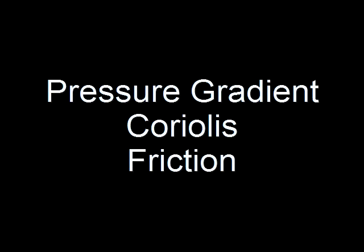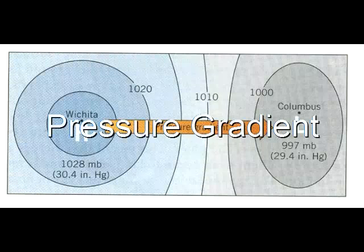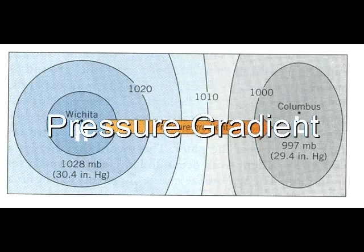The horizontal movement of air is affected by three forces: the pressure gradient force, the Coriolis force, and the friction force. Unequal heating of the earth's surface causes high and low pressure areas in the atmosphere and with this the pressure gradient.